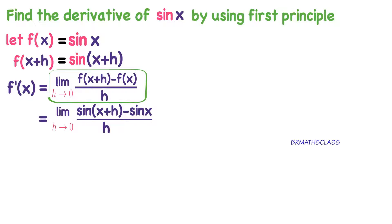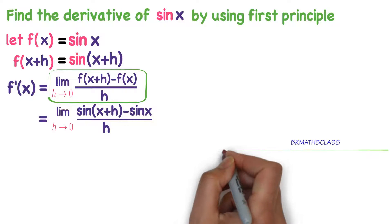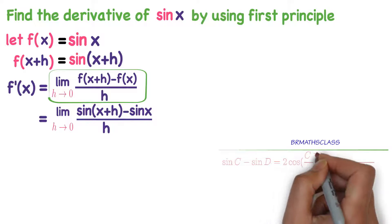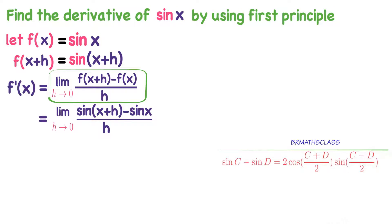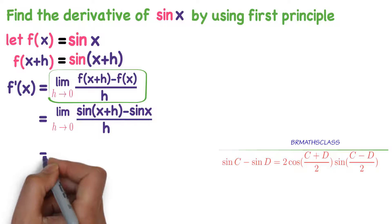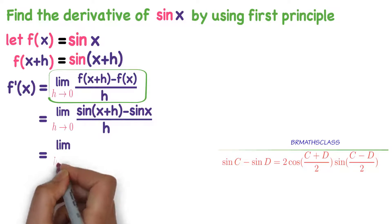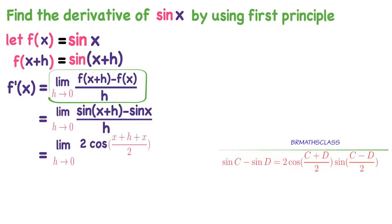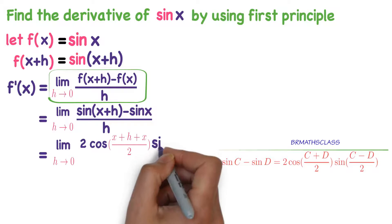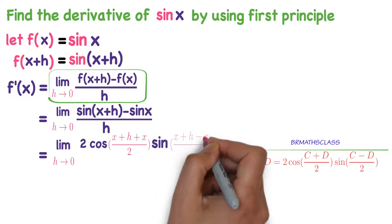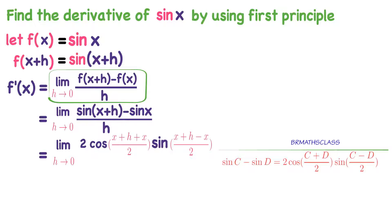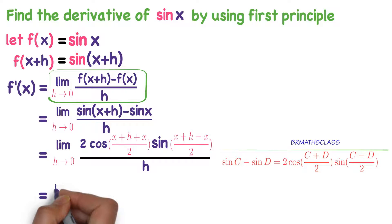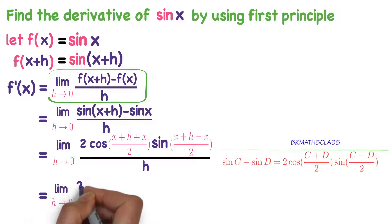Here the formula of trigonometry is required. You know that sin C minus sin D equals 2 cos((C+D)/2) times sin((C-D)/2). Applying the same formula: limit h tends to 0 of 2 cos((x+h+x)/2) times sin((x+h-x)/2), all divided by h.